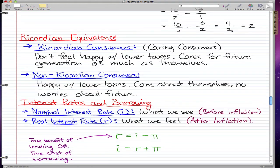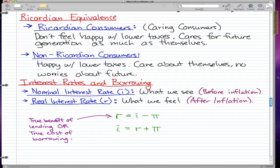Now we're going to talk about interest rates and borrowing. We'll start with definitions of nominal interest rate and real interest rate, which I abbreviated as I and R. Nominal interest rate is what we see—the number on paper before inflation. Real interest rate is the opposite. It's what we feel—the interest rate after inflation.